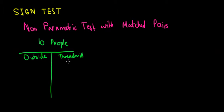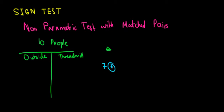We take these observations, record specific times, and calculate the differences between outside and treadmill. Let's assume we have seven positive differences and three negative differences.